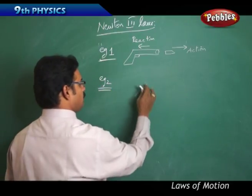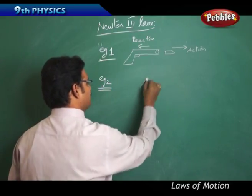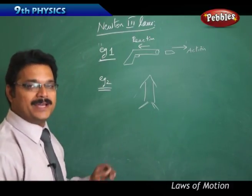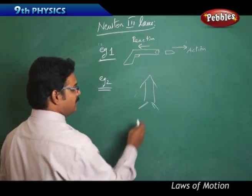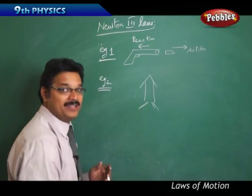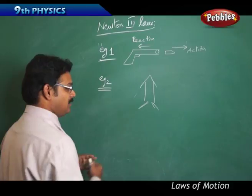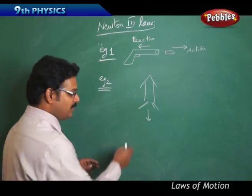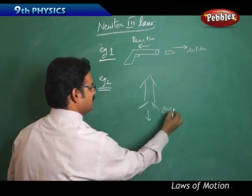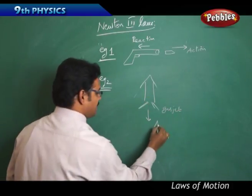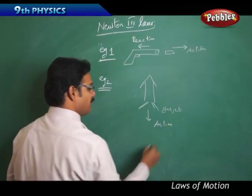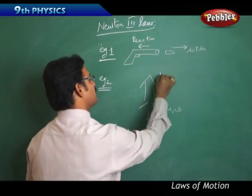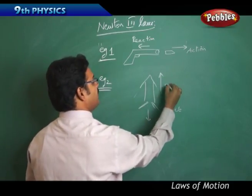Another example is the movement of a rocket. A rocket moves in the upward direction against gravity because of gas burning in the combustion chamber. This gas comes out as a gas jet in the downward direction, which is the action. Because of that, it applies pressure on the rocket in the upward direction and the rocket moves upward — which is the reaction.